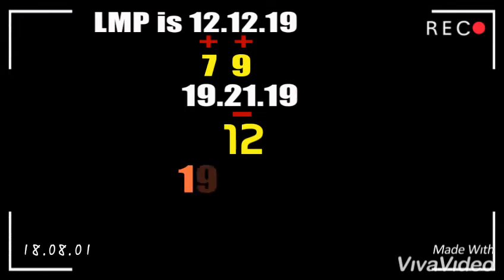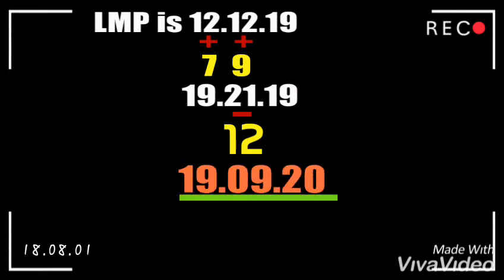The final answer for example B is 19/09/20. Don't forget where the 20 comes from — because we subtracted the month (21 minus 12), the year automatically changes and increases by one.